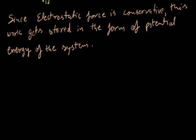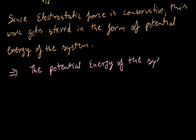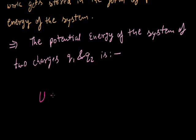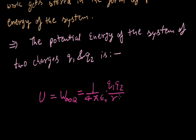So the potential energy of the system of two charges Q1 and Q2 is U equal to W_infinity_Q, that will be equal to 1 upon 4π epsilon_0, Q1Q2 upon r12. We can write this as k Q1Q2 upon r12.